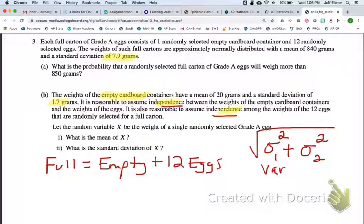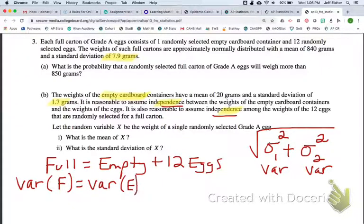This is the variance. So the variance of a full carton, we'll say F, is the variance of the empty carton, we'll say E, plus 12 of the variances of a certain egg. Maybe I'll do lowercase e for egg.